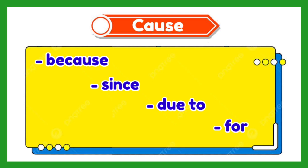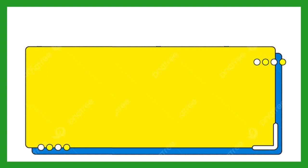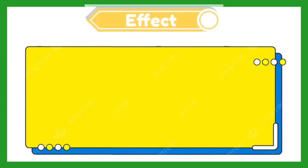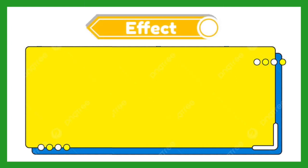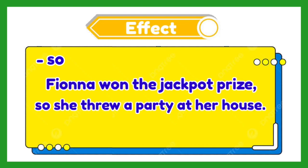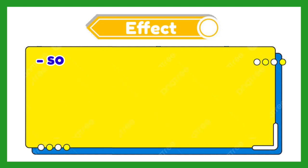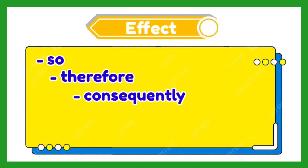Now let us have the words we can use to show effect. One of them is 'so,' just like this example — 'so' introduces the effect. Other words are 'therefore,' 'consequently,' 'hence,' and 'as a result.'